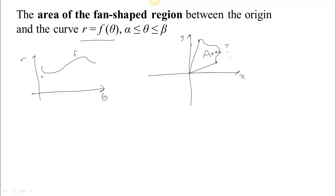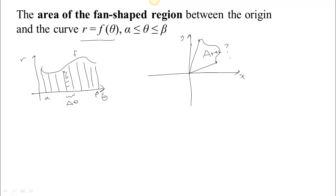When we're doing a straight integral from Calc 1, what we did was take the interval with starting angle alpha and ending angle beta and partition it. Each little rectangle was basically delta-theta wide, so the area was f of theta times delta theta, and then we summed all those up by doing an integral.